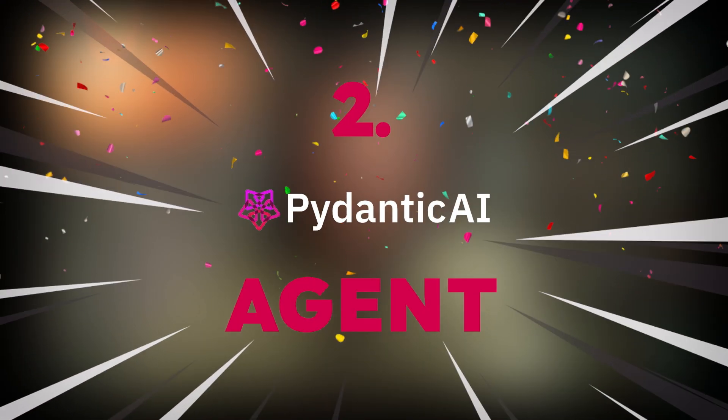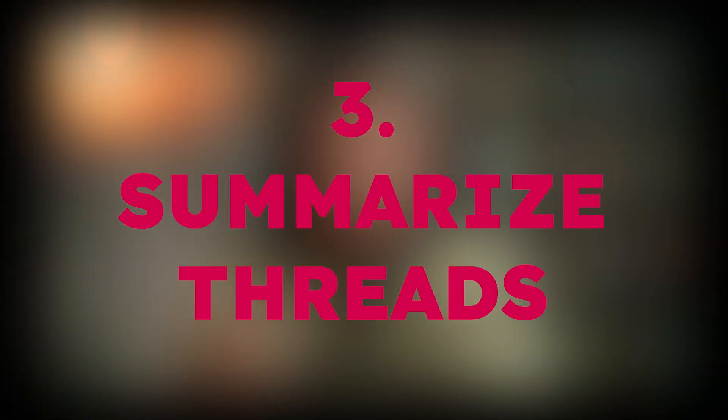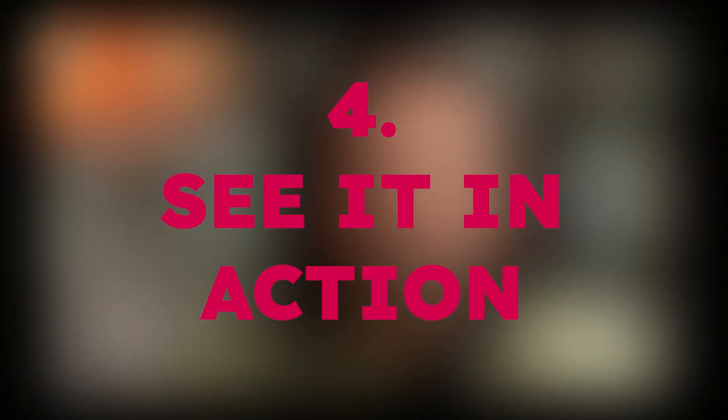First things first, let's set up our Python project and grab all the tools we need. Then we'll introduce our star of the show, the Pydantic AI agent. You can think of it as our brainy bot with a knack for understanding Slack chatter. We'll teach it what to look for and how to dish out those summaries in a way that we like. Next up, we'll do a bit of coding and tell our agent how to summarize those threads. Finally, we'll unleash our agent into the wild Slack jungle and see it in action.